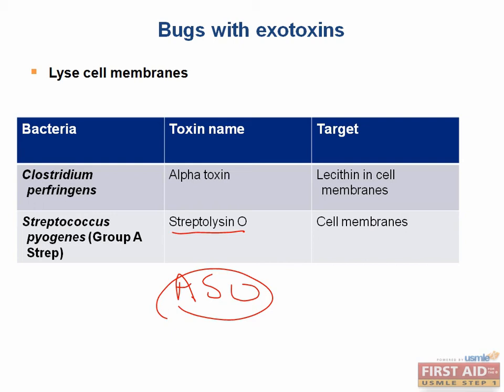Key physical exam findings of rheumatic fever include subcutaneous nodules, polyarthritis, a rash called erythema marginatum, carditis, and choreiform movements. You will learn more about rheumatic fever when you study cardiology.